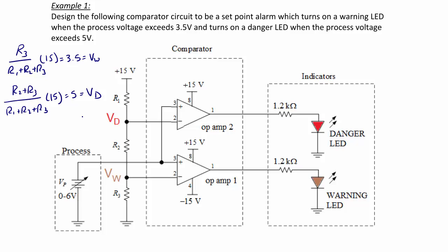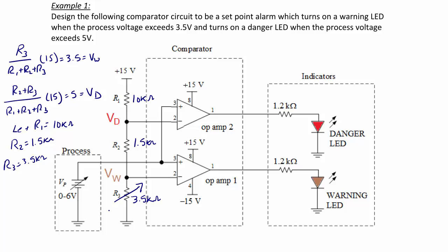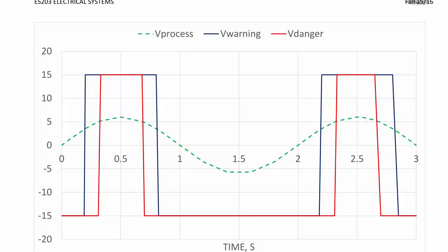By solving this system of equations with one constraint, if we let R1 equal 10 kilohms, we have two equations and two unknowns. Solving gives R2 equal to 1.5 kilohms and R3 equal to 3.5 kilohms. Since there is no standard 5% resistor at exactly 3.5 kilohms, we set R3 to be a variable resistor or potentiometer.